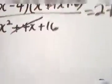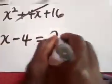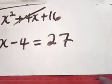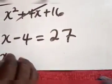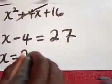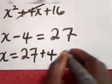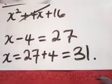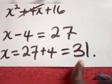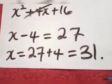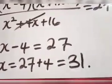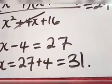We now have x minus 4 equals 27. Collecting like terms, we send the minus 4 across and it becomes 27 plus 4, and that gives us 31. So x equals 31. If you substitute 31 into the question, you will see that the answer will be equal to 3. Thanks for watching, have a nice day.